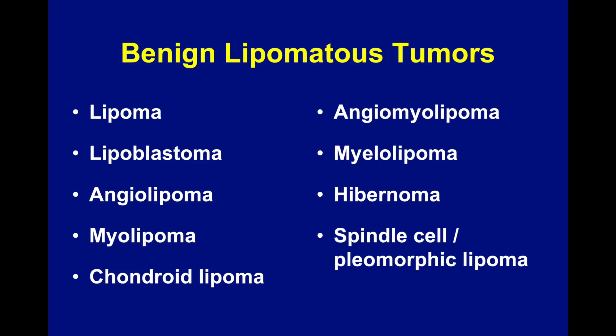But there are some benign lipomatous tumors that do cause a problem. I'm certainly not going to discuss all of these by any means. Just as an example, chondroid lipoma is an incredibly rare benign lipomatous tumor that most surgical pathologists probably won't even encounter in their lifetime. But the one that pathologists do see quite a bit of is the family of spindle cell and pleomorphic lipoma. That is the most common benign lipomatous tumor that we see as a consult where there's concern for a sarcoma, and I'm going to specifically talk about spindle cell and pleomorphic lipomas in this lecture.